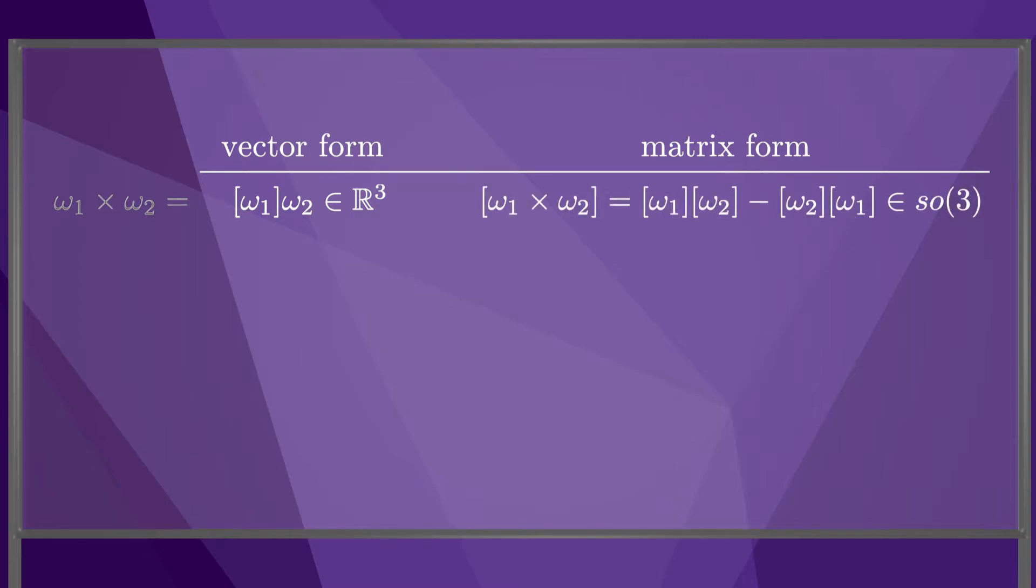The 3x3 little SO3 matrix form of this cross-product is bracket omega-1 times bracket omega-2 minus bracket omega-2 times bracket omega-1.